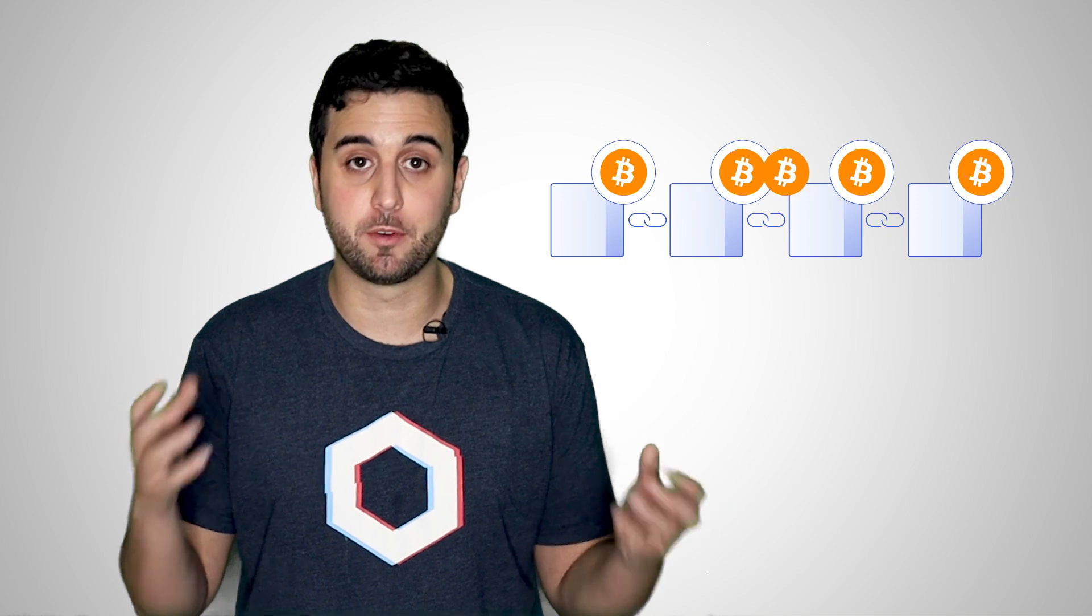Blockchains of the early 2010s, such as Bitcoin, were application specific. This meant that blockchains were created for a specific use case, such as the Bitcoin blockchain being made to transfer Bitcoin. Developers would have to design and bootstrap an entirely new blockchain just to create a new application.